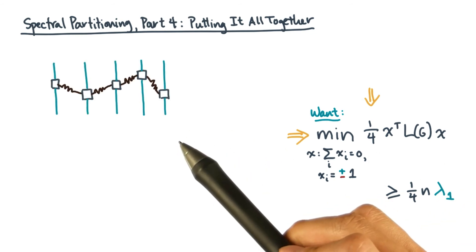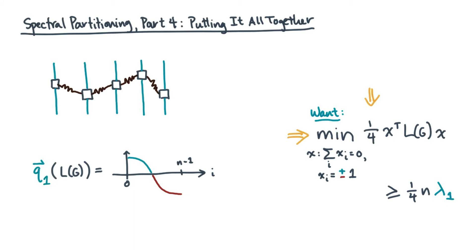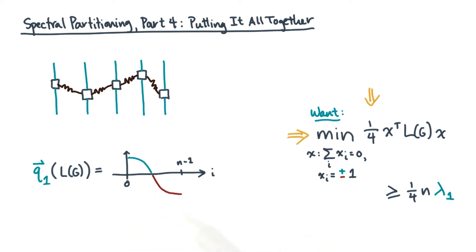Do you remember our spring analogy? The Laplacian derived from the spring system gives us a second smallest eigenvector that looks like this. If you plot the components of the eigenvector for the second smallest eigenvalue, you'll get something that looks like this. It's sign curvy because that's what the fundamental modes of the spring system look like. And as it turns out, half of its elements are positive and the other half are negative.